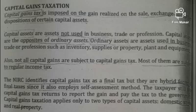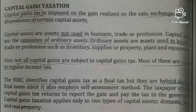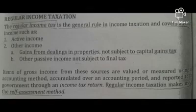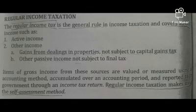Capital gains taxation applies only to two types of capital assets: domestic stocks and real property. Under capital gains taxation, the taxpayer still needs to file the capital gains tax return to report the gain and pay the tax to the government. The regular income tax is the general rule in income taxation and covers all other income such as active income and other income, which includes gains from dealings in properties not subject to capital gains tax and passive income not subject to final tax.